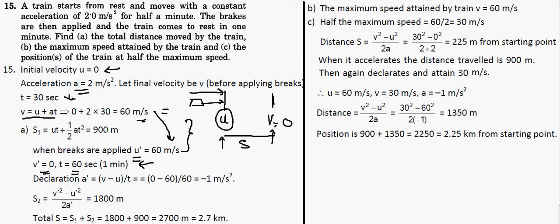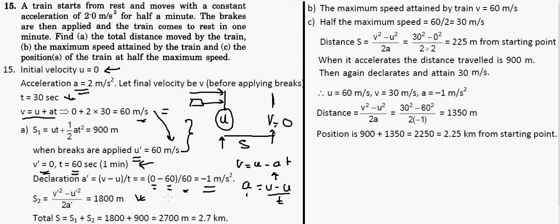So when the brakes are applied, the initial velocity is 60 m/s, the final velocity is zero, and it takes 60 seconds. There will be deceleration, so we use v = u - at. Solving for a: a = (v - u) / t = (0 - 60) / 60 = -1 meter per second squared.